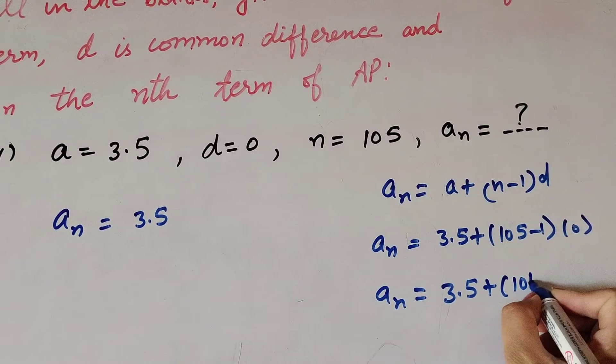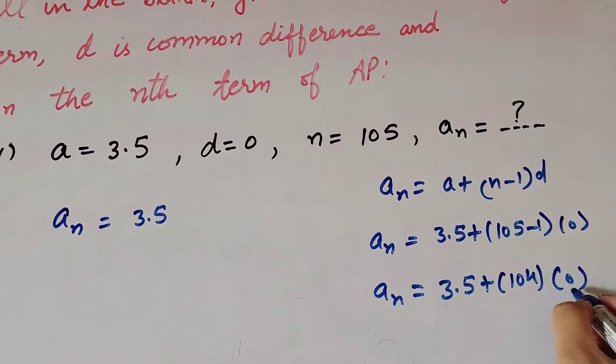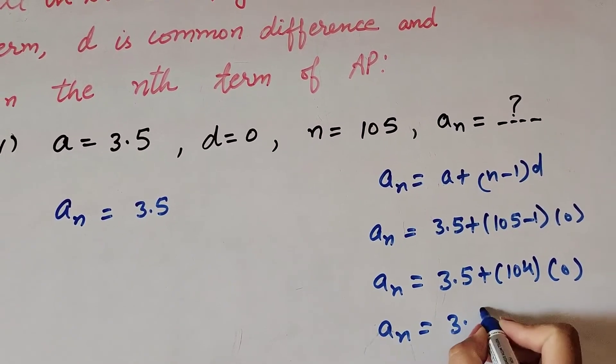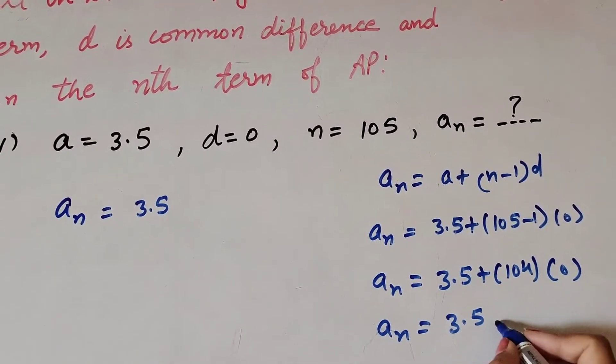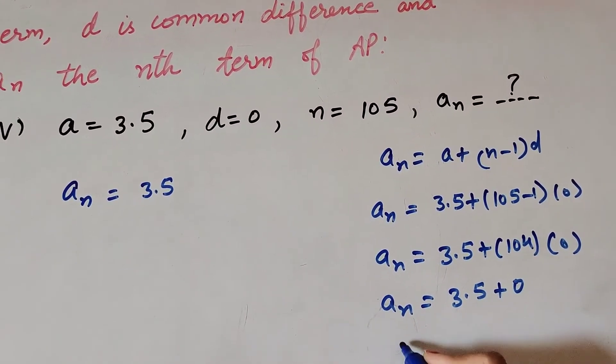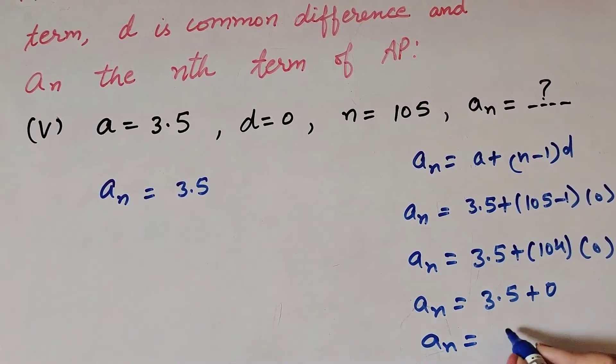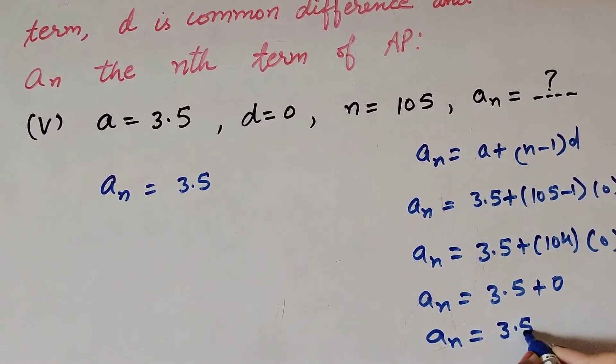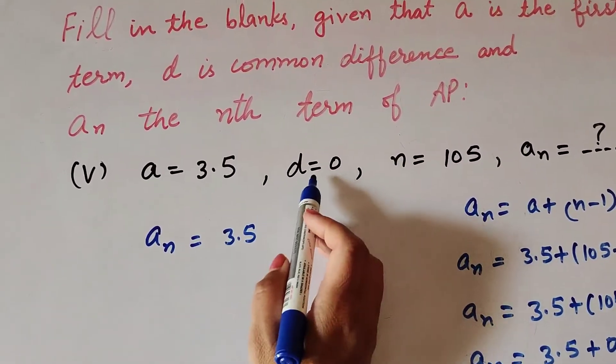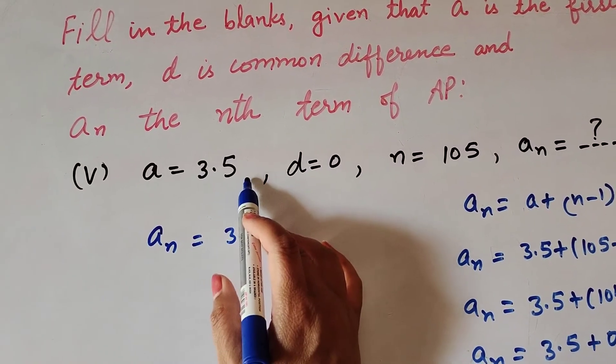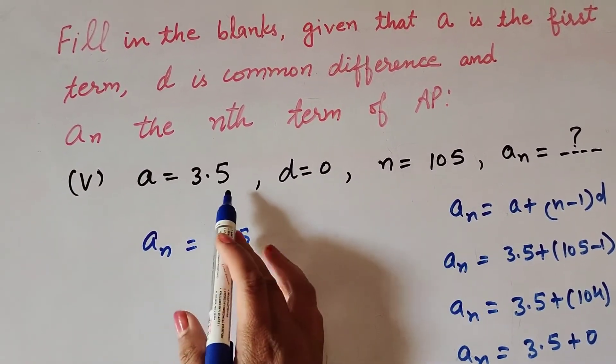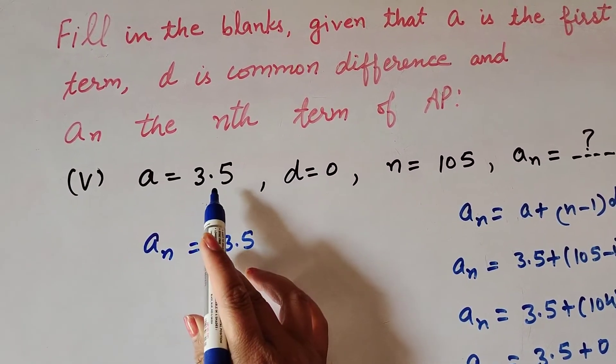Therefore, an equals 3.5. So when common difference d is equal to 0 and it is added to the first term, then the nth term of the AP remains the same: 3.5.